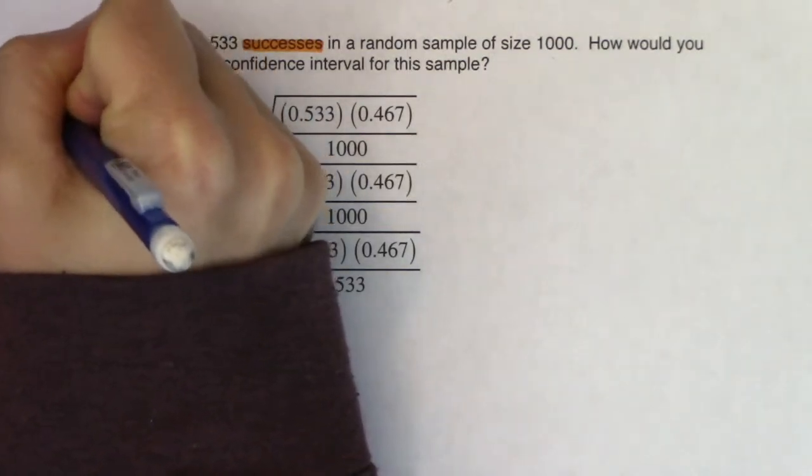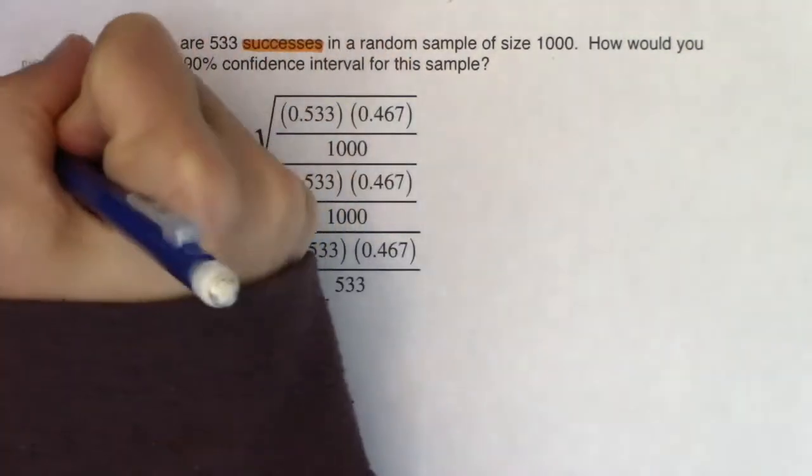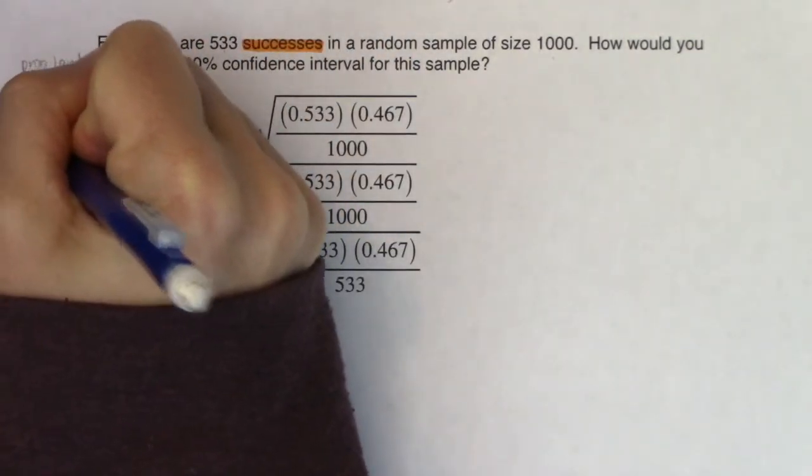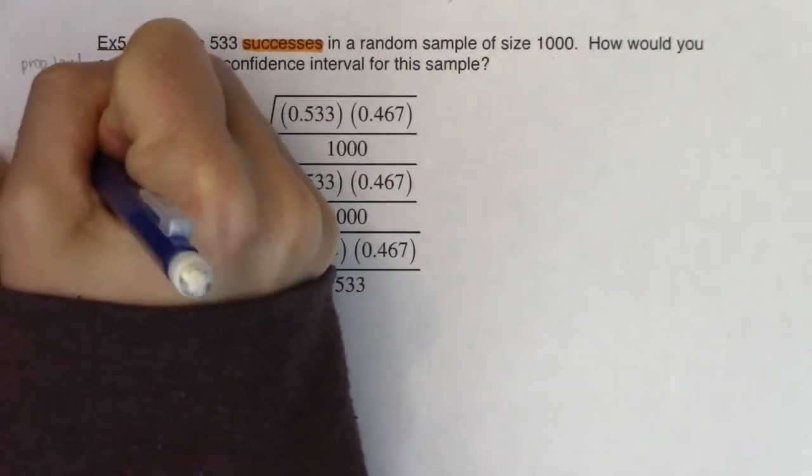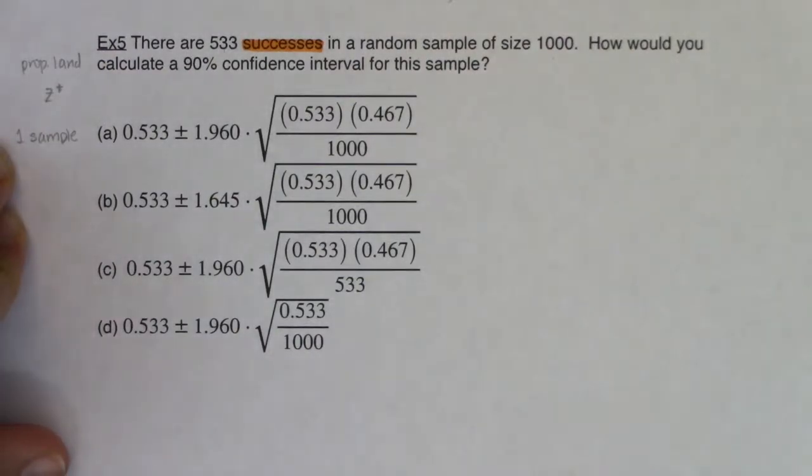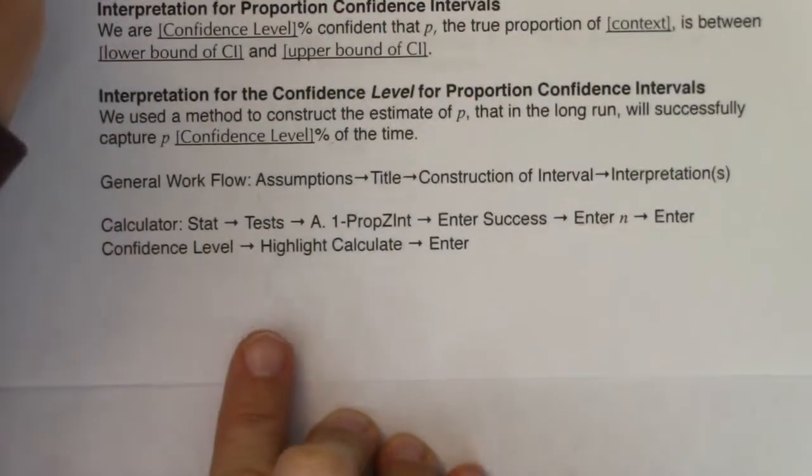Which means I know I'm going to use a z star critical value. And I only took one sample. My sample size is 1,000, but I only did this once. So if I wanted to construct a confidence interval, I'm going to refer back to our process, our general workflow. I'm going to check some assumptions, make a title, construct the interval, and interpret it.